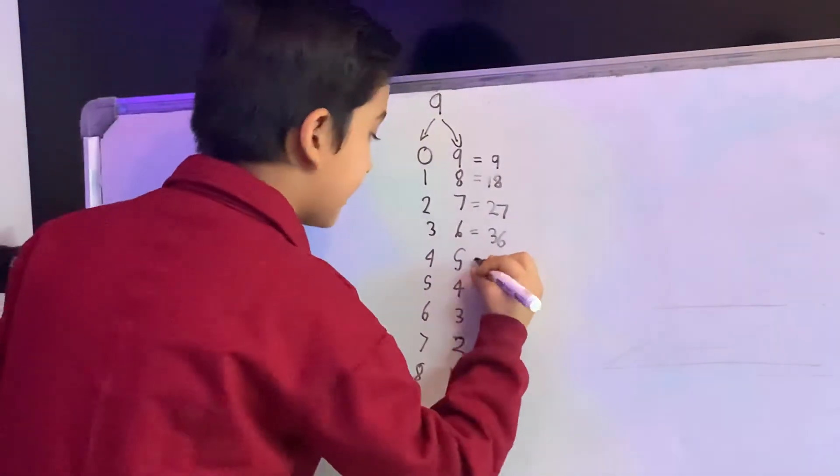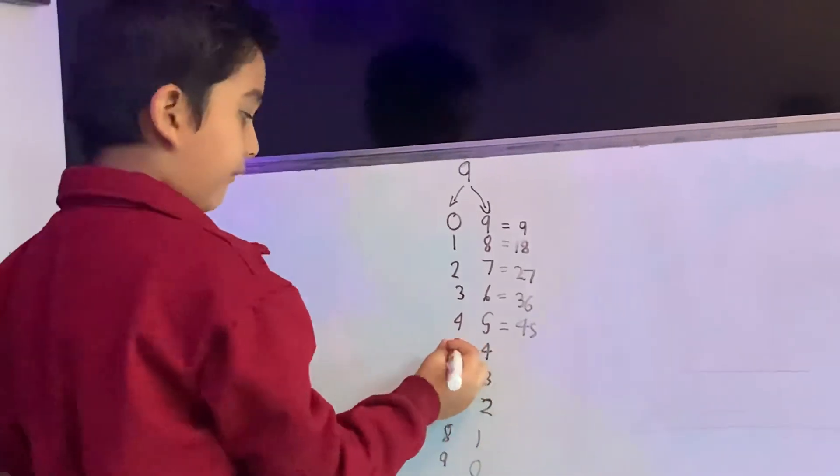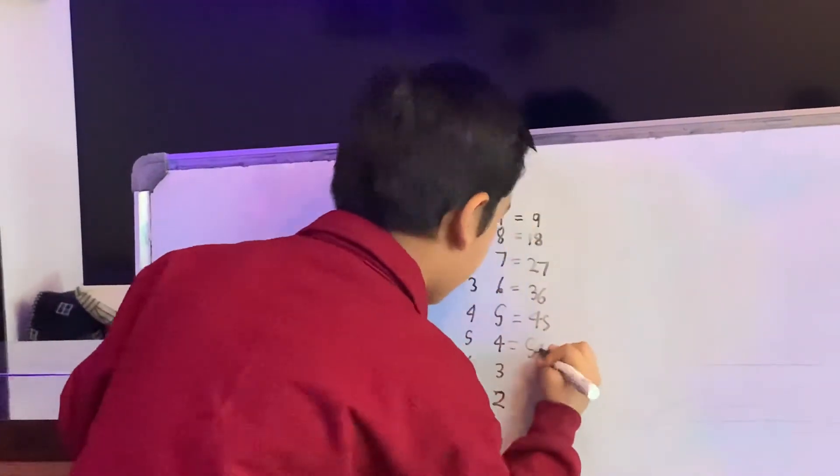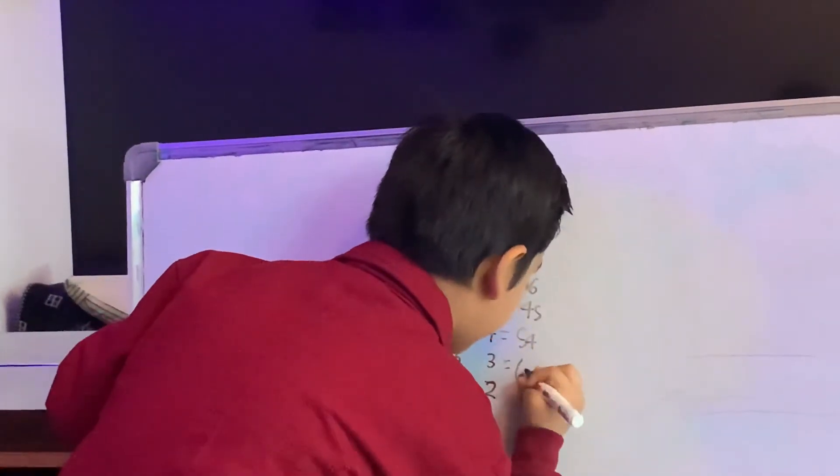4, 5 is equal to 45. 5, 4 is equal to 54. 6, 3 is equal to 63.